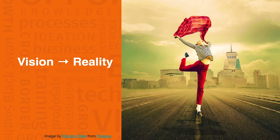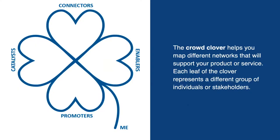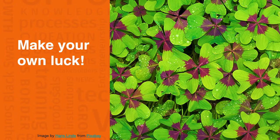Our first exercise in Module 4 is called the Crowd Clover. It's a four-leafed clover, which in many cultures is a symbol of good luck. With this exercise you will make your own good luck by realising just how many people you know who can help you make your dream a reality.